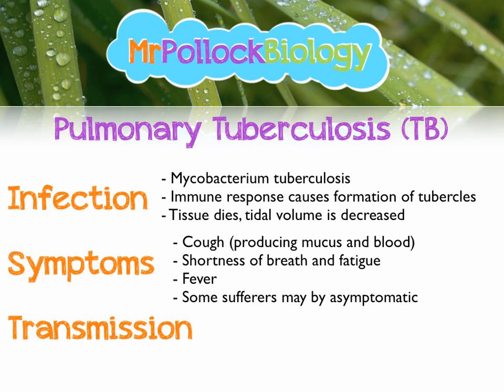Some sufferers may actually experience no symptoms whatsoever - they may be what we call asymptomatic. That's why TB is a problem, because you might be carrying TB and be able to infect other people without showing any symptoms yourself. TB is passed on by droplet infection, which is basically sneezes and coughs. When you sneeze and cough, you suspend bacteria in mucus and spray it out into the atmosphere. If someone else inhales that, they're going to get infected with TB too, if their immune system can't cope with it.